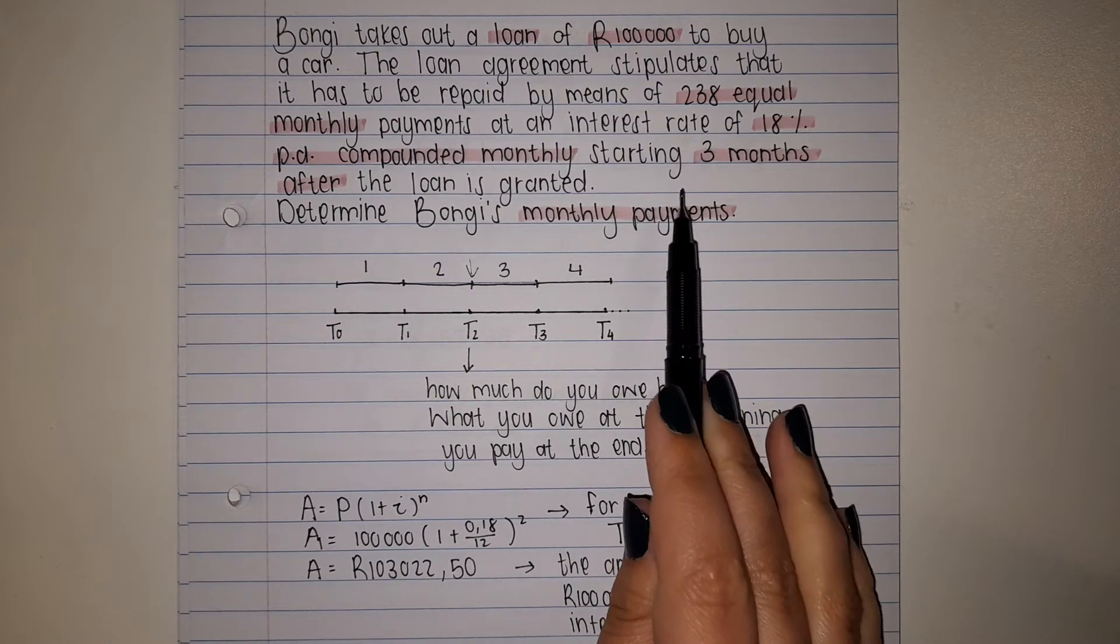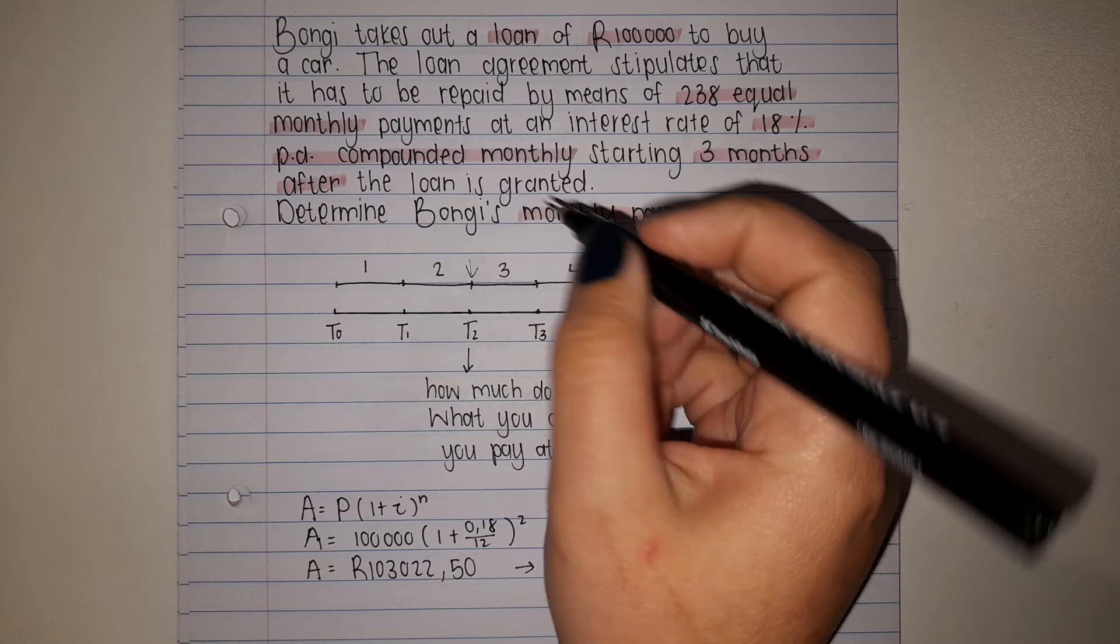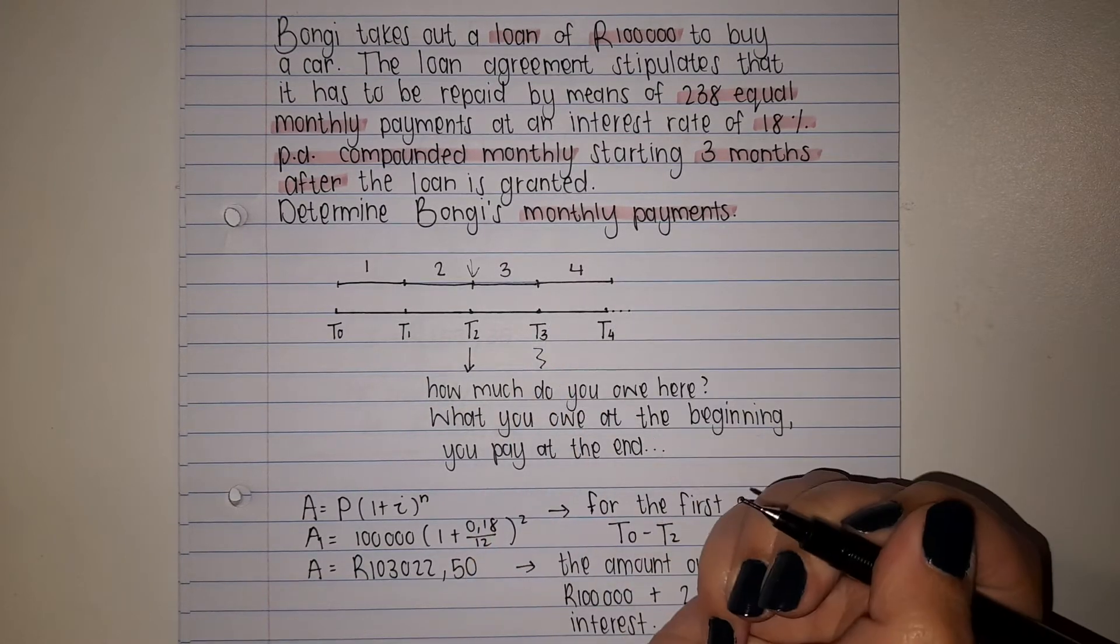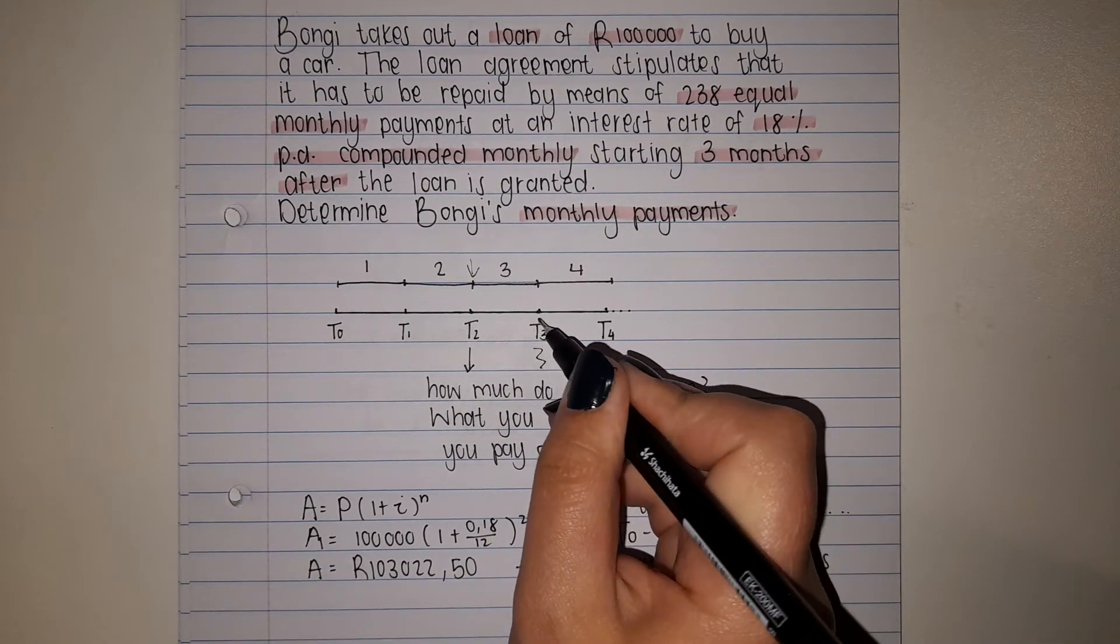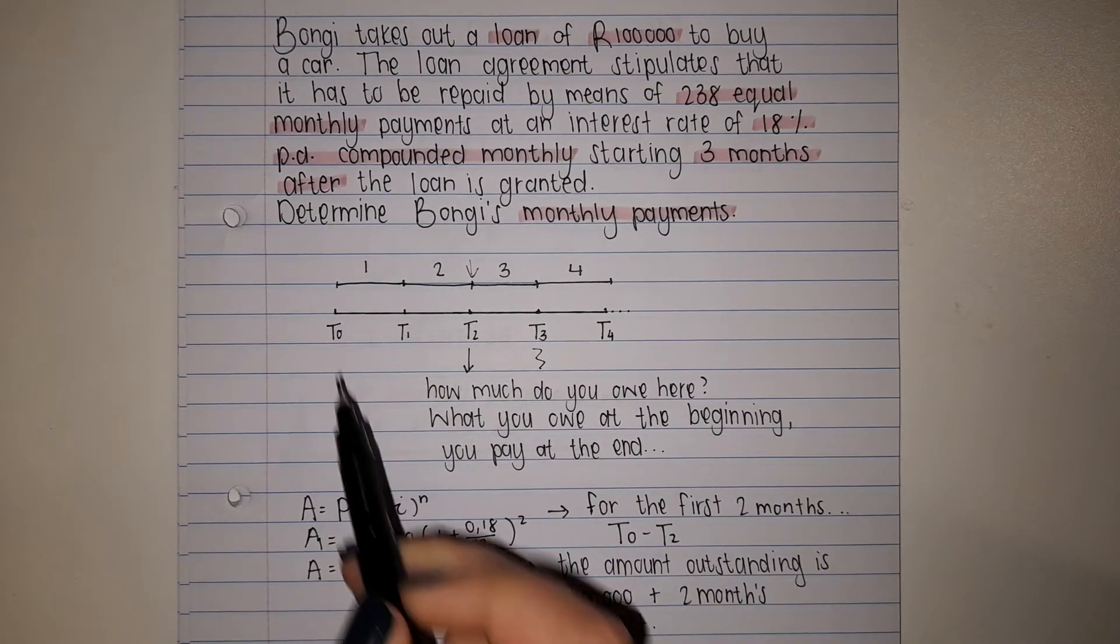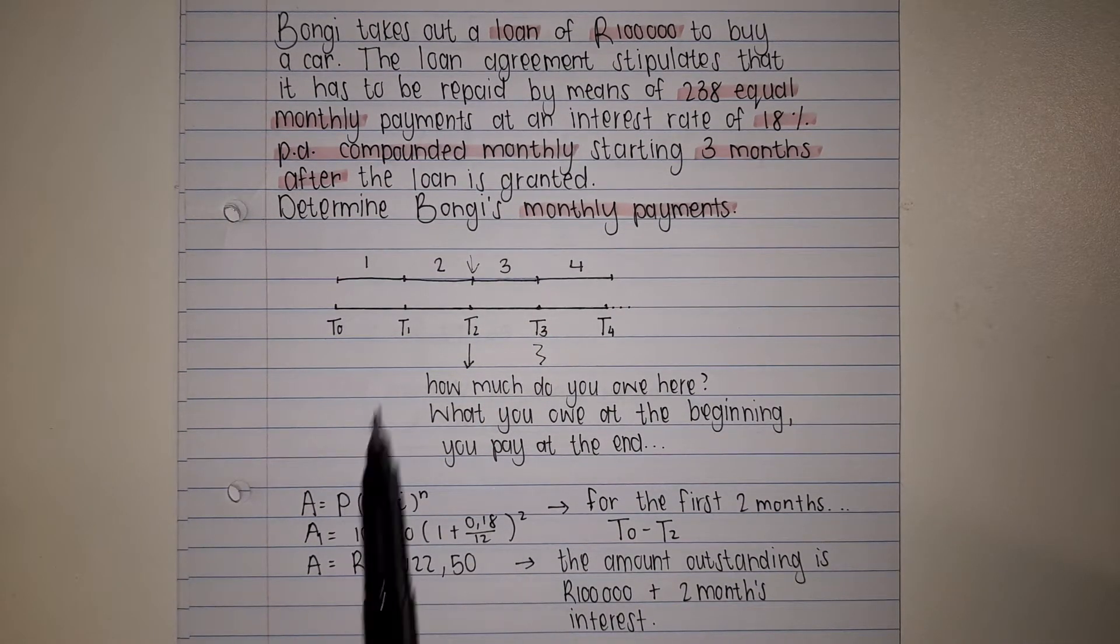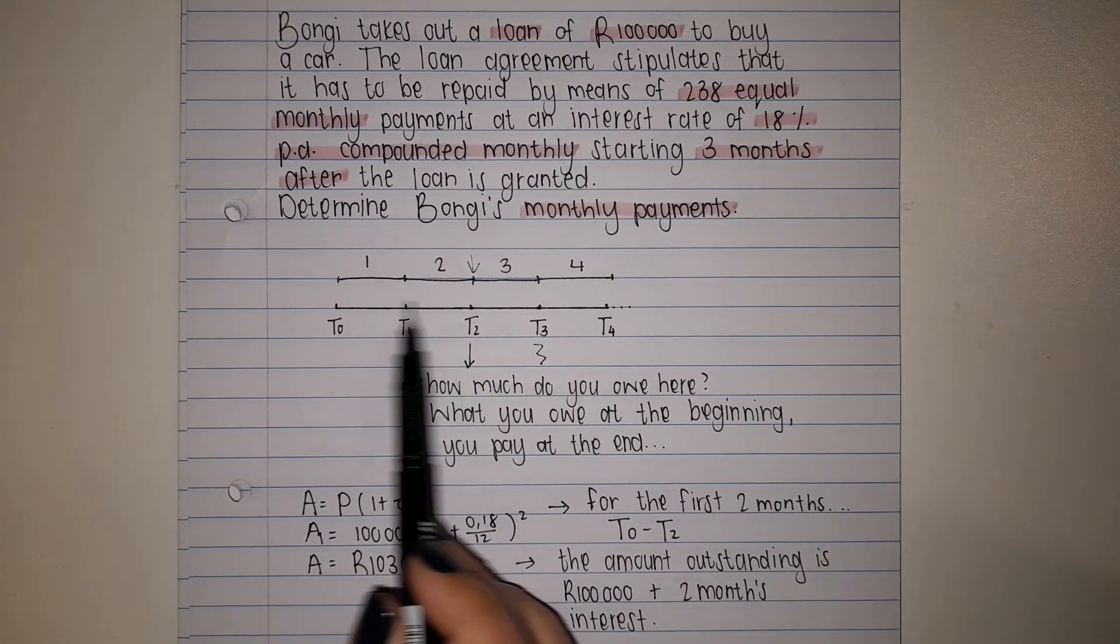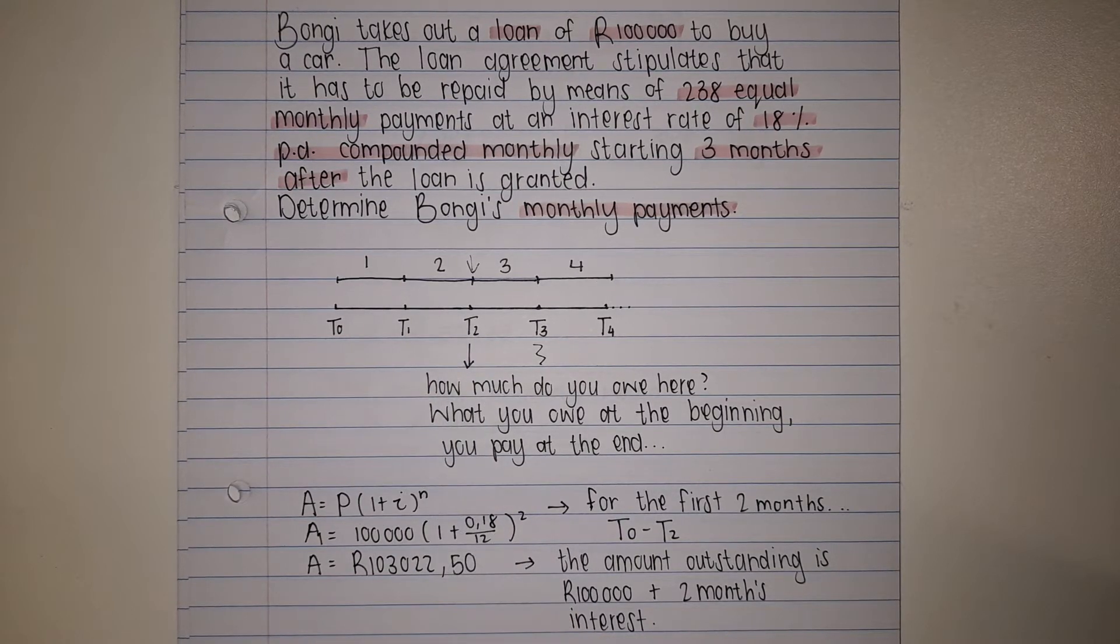If they say starting three months after, if she needs to start paying over here we need to know what she needs to repay at the beginning of that month. We need to find out what interest was gained in these two months.